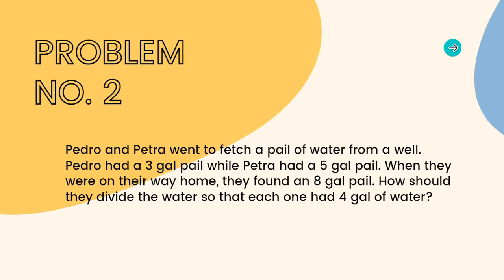Let's move on to another problem. Our second problem states that Pedro and Petra went to fetch a pail of water from the well. Pedro had a three gallon pail while Petra had a five gallon pail. Once they were on their way home, they found an eight gallon pail. How should they divide the water so that each one of them had four gallons?